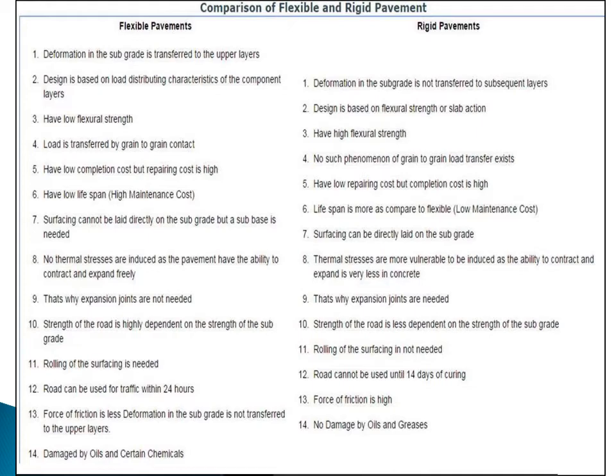The twelfth point: the road can be opened to traffic within 24 hours after construction of flexible pavement. Whereas in case of rigid pavement, the slab needs to be cured for a minimum of 28 days. If early-strength admixtures are used, a minimum of 14 days curing is required, though the use of admixtures increases the cost for such a large quantity of concrete.